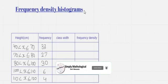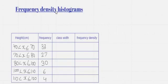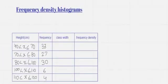The first question that arrives in our mind is: what is frequency density? The frequency density of a class is defined as frequency density equals frequency divided by class width. It gives the frequency per unit of the data in this class, where the unit is the unit of measurement of the data.